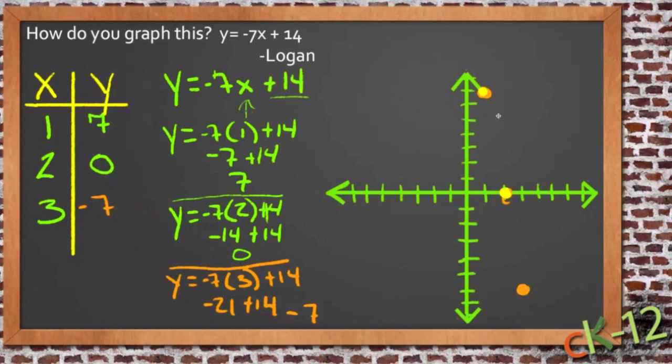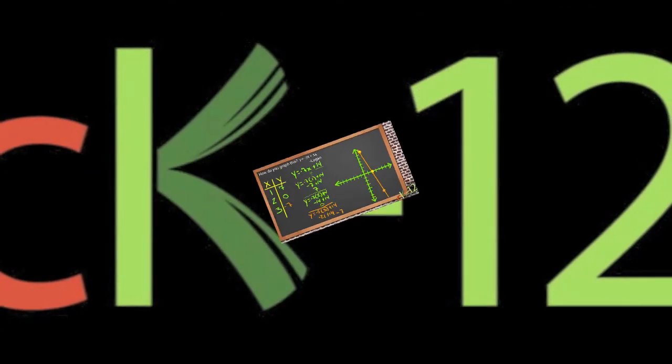So yeah, it looks now like our points are all on a line, which is what we definitely were hoping was going to happen, since this is definitely a linear equation, and we just need to connect all three points with a straight line, and there you go, Logan. Equation has been graphed.